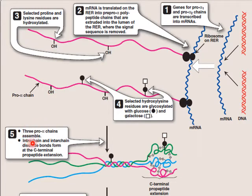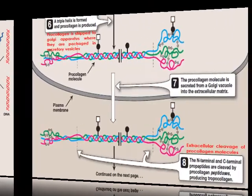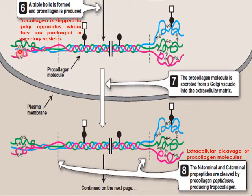Intrachain and interchain disulfide bonds are formed at the C-terminus — the carboxylic acid-containing end. At the C-terminus of the three pro-alpha chains, interchain disulfide bonds form between the chains, and intrachain disulfide bonds form within each chain. The same intrachain and interchain disulfide bonding also takes place at the N-terminus.